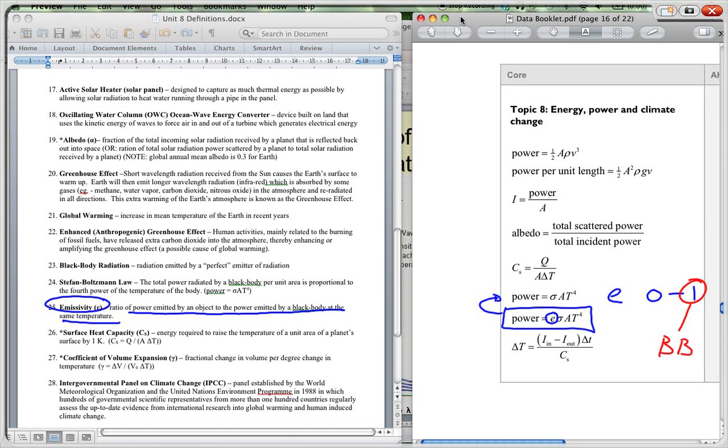And where zero would be that you're getting just about no radiation. So some materials don't emit their heat, don't transport the heat away from them. This would have a low emissivity. So emissivity is just the ratio, as it says over here, the ratio of the power emitted by an object to the power emitted by a black body at the same temperature.